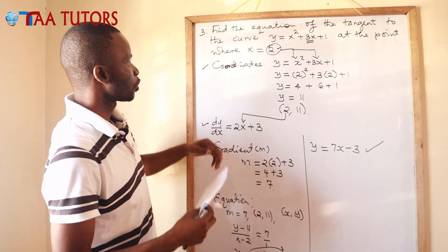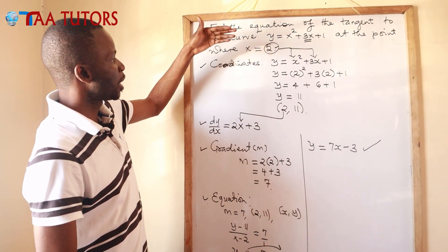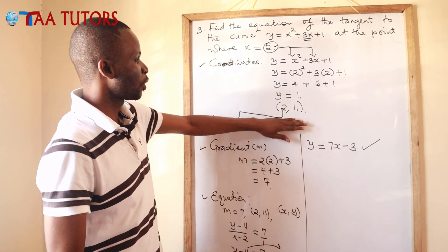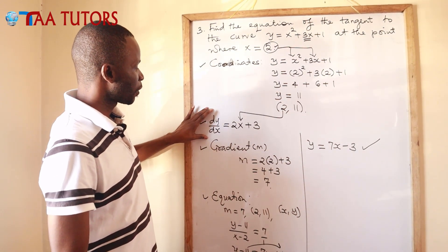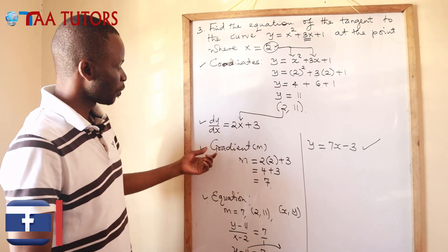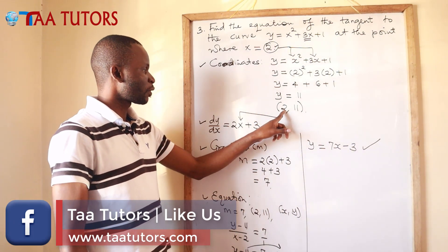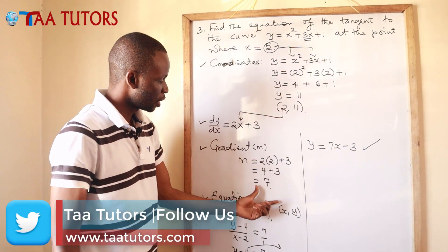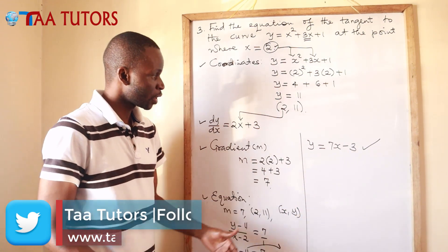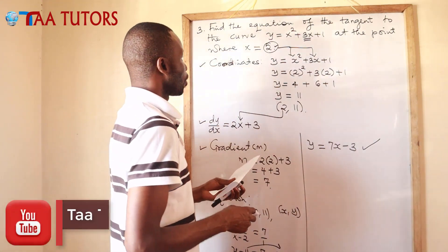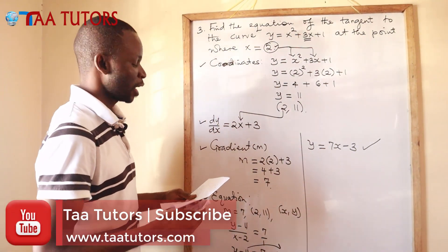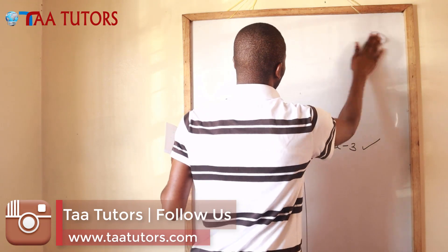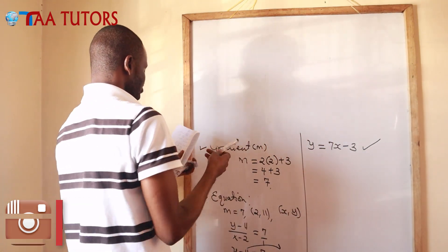You can see how we followed this process. We were told x equals 2, substituted into the equation to get y equals 11, giving coordinate (2, 11). Then we found dy/dx equals 2x plus 3, substituted x equals 2 to get gradient 7. Finally, using the coordinate, gradient, and arbitrary point (x, y), we obtained the equation of the tangent y equals 7x minus 3.